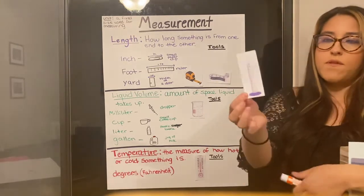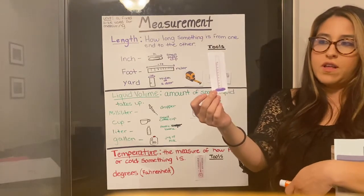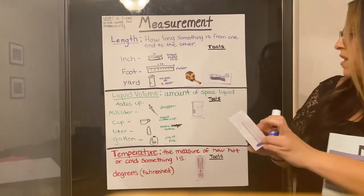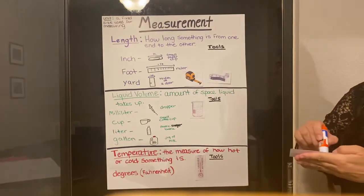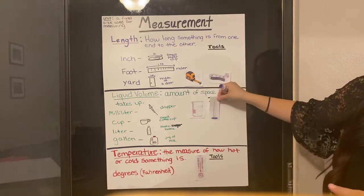Next we have a graduated cylinder. This is something, another thing you will often see in science class. It's kind of like a beaker, but it's a little bit more tall and narrow, and it's good for measuring small amounts of liquid.